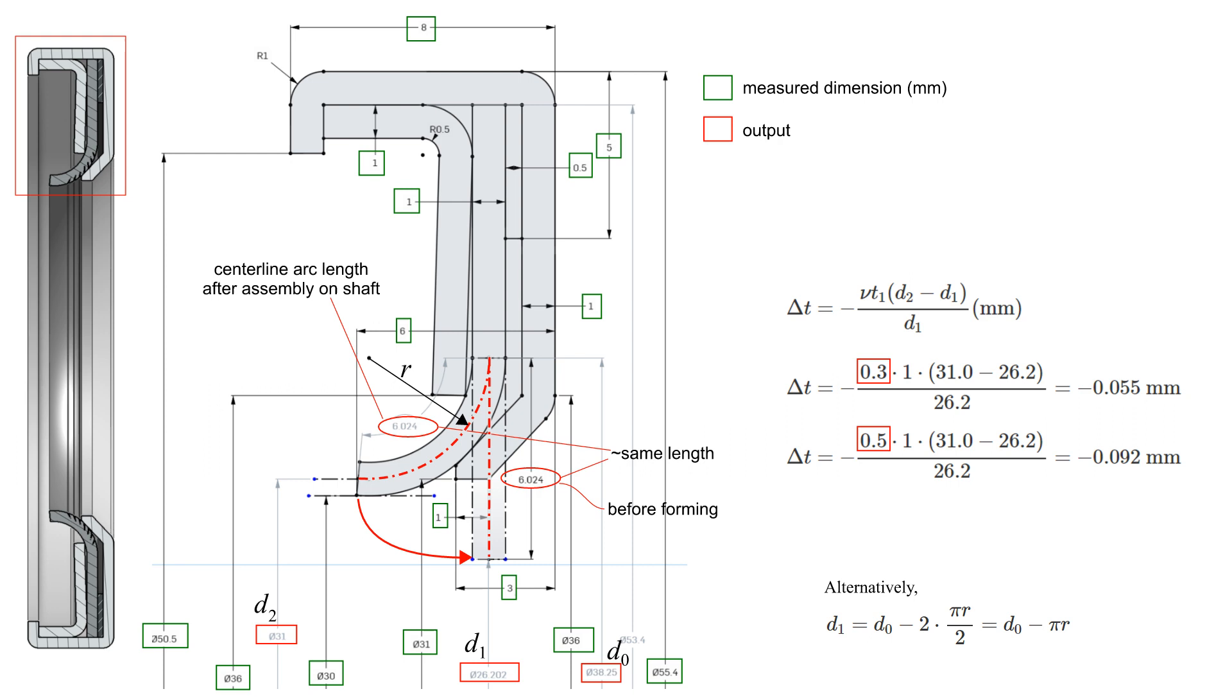It's assumed that all strains are very small, so that the center lines before and after forming have the same length, shown here as red dash-dot lines. Given the shown contact conditions, this model conveniently provided the value for D1.